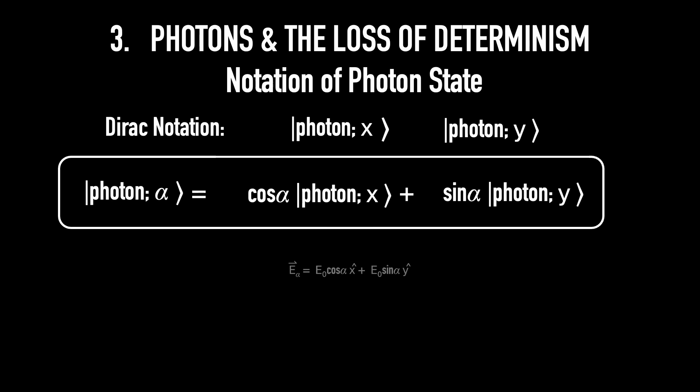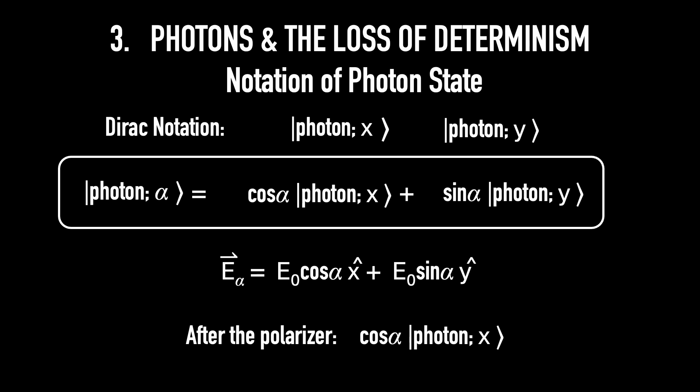Compare with the classical equation. What you lose here is the E0, because this is the equation for one photon. After the polarizer, the photon is only in the state photon x, because the y-direction doesn't go through. When it goes through, the whole photon goes through. So there's no need for a cos alpha here. And that's the state of the photon that goes out of the polarizer.